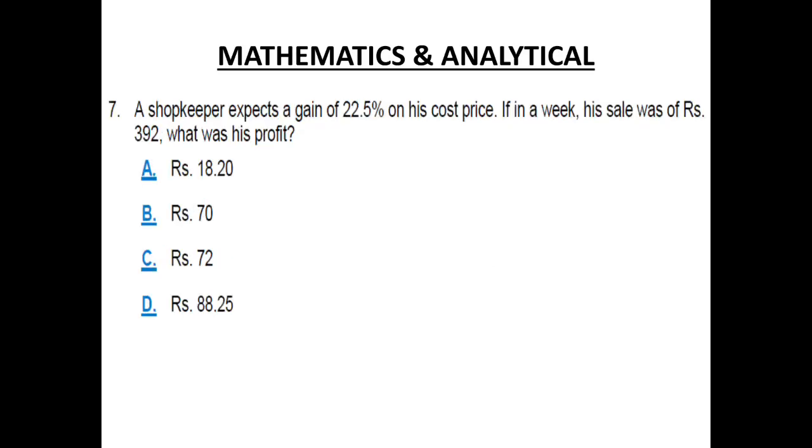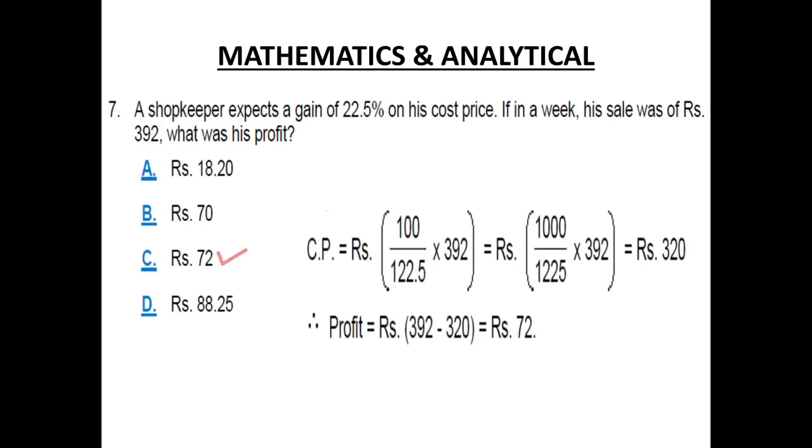Number 7. A shopkeeper expects a gain of 22.5% on his cost price. If in a week his sale was of Rs. 392, what was his profit? The answer is Rs. 72 which is option C. Cost price equals Rs. 100 over 122.5 into 392.